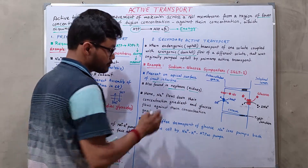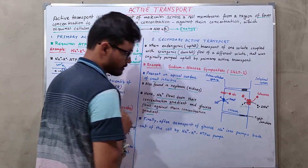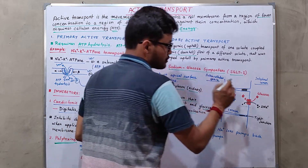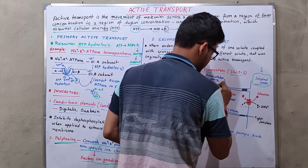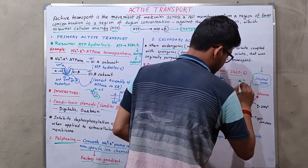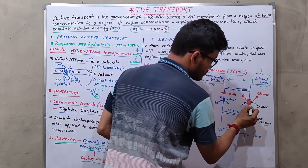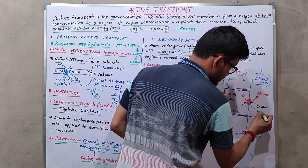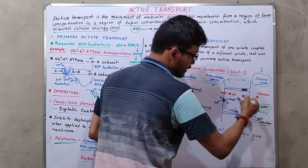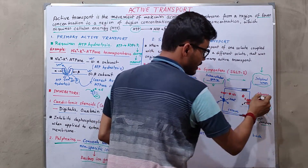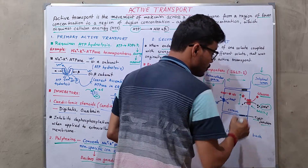Whenever sodium flows down its concentration gradient, glucose flows against its concentration gradient. Looking at the diagram — this is the intestinal lumen, this is the intracellular space, and these are the tight junctions. The SGLT1 transporter facilitates sodium ion transport down its concentration gradient and simultaneously transports glucose against its concentration gradient.